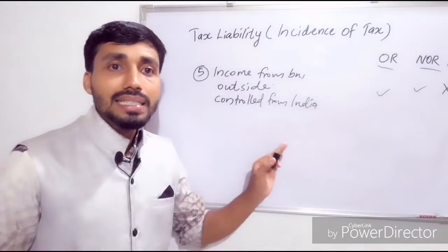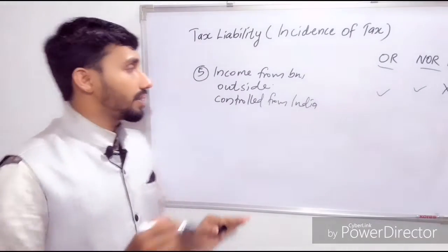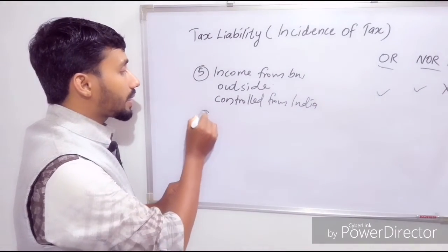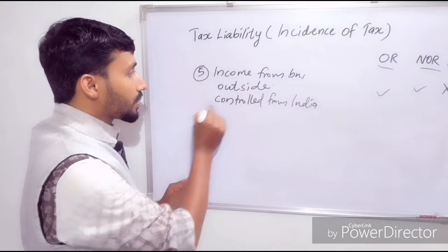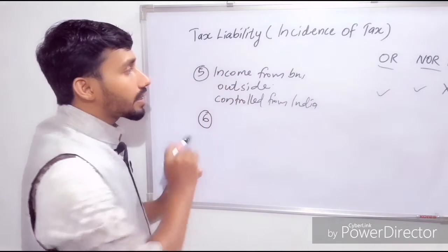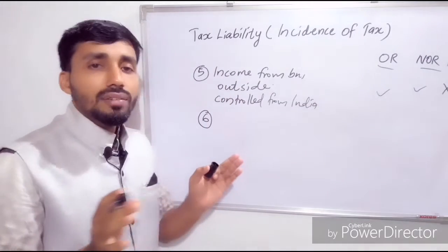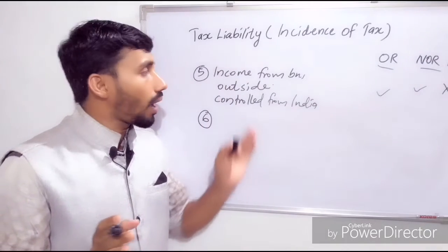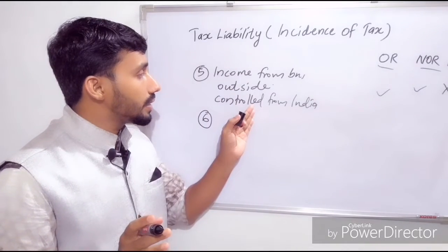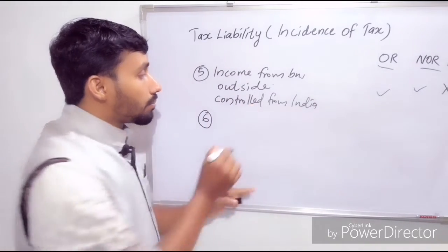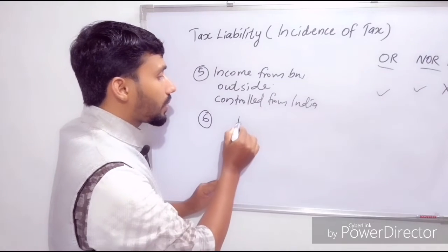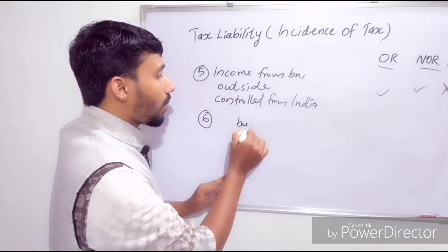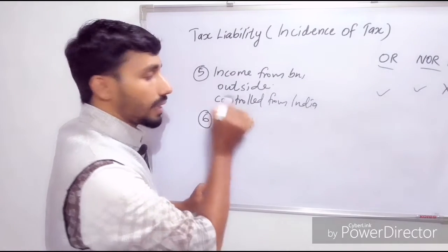The sixth category is income from business outside India but controlled from outside India.